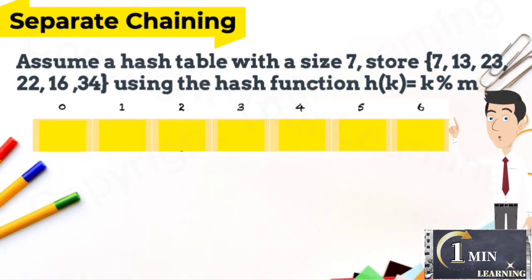For first input data 7, the hash table returns the hash value of 0. So 7 is stored at index 0.